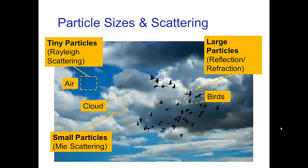To understand the different types of scattering, it's important to realize that we have different effects due to the size of the particles doing the scattering. We'll focus mainly on two types: scattering by the very tiniest particles such as air molecules — this is Rayleigh scattering — and then scattering by somewhat larger particles, which is called Mie scattering. Larger yet is not really scattering; it's more a combination of reflection and refraction.